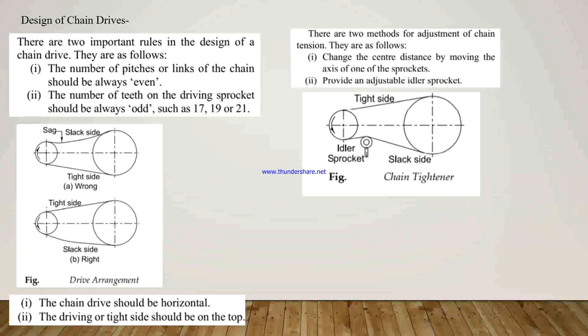First, it is recommended that while designing a chain drive, the number of pitches or links of the chain should always be even, and the number of teeth on the driving sprocket should always be odd, such as 17, 19, or 21. The odd number of teeth of the sprocket in combination with an even number of chain links facilitates uniform wear.